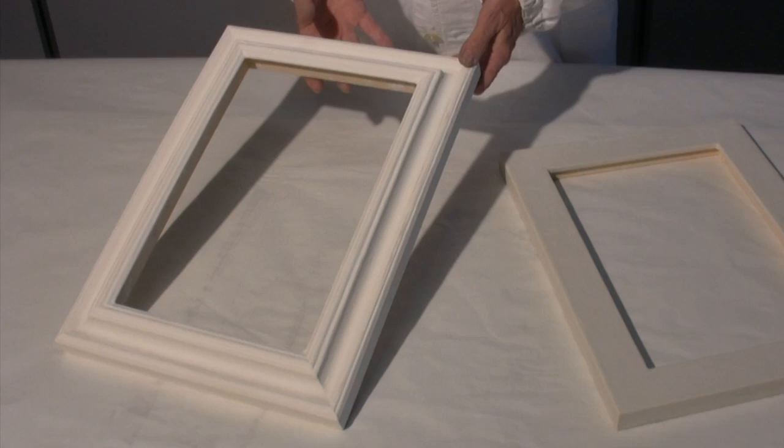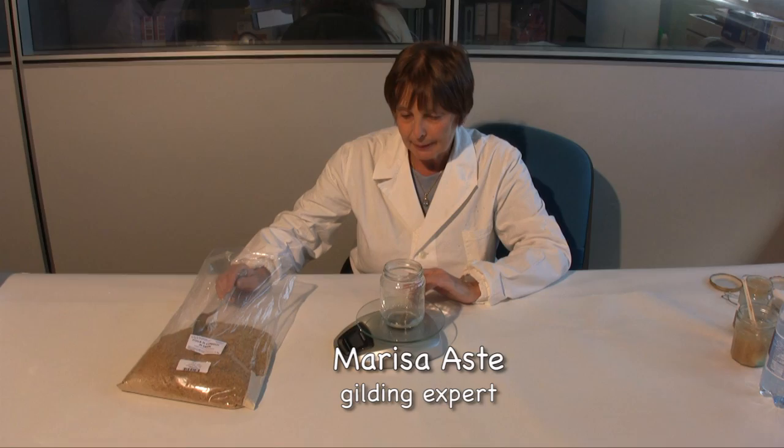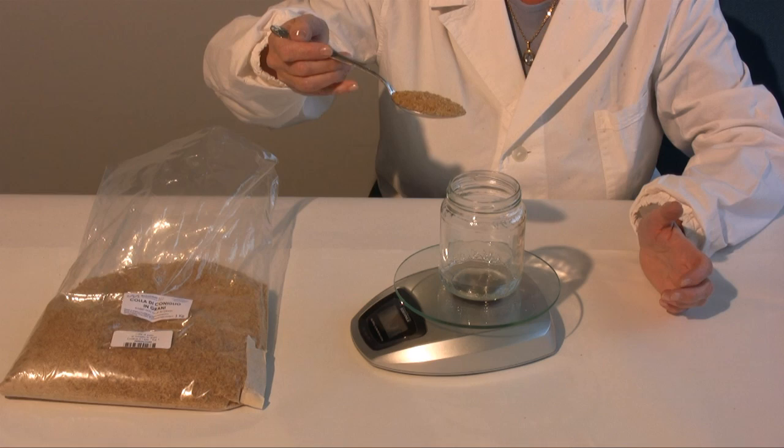Some rabbit skin glue has to be mixed with the plaster so that it sticks better. I'll start by explaining how to prepare the rabbit skin glue. The glue is in a granular form.